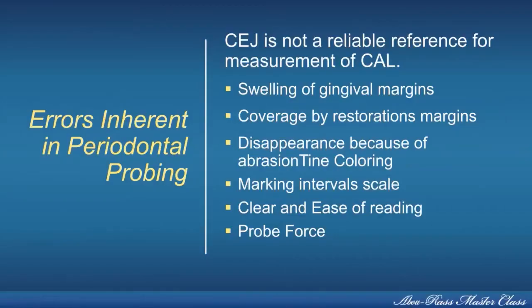In periodontics, we use intraoral radiology, specifically periapical and bite-wing. We go through the plaque index, pocket depth index, clinical attachment level, bleeding on probing, and Miller Mobility Index. The unit focuses on one area which is very important — periodontal probing. In detail, it goes over the inherent errors in periodontal probing, specifically that the cementoenamel junction is not a reliable reference for measurement of clinical attachment level. Swelling, restorations, or problems such as abrasion all interfere with periodontal probing.